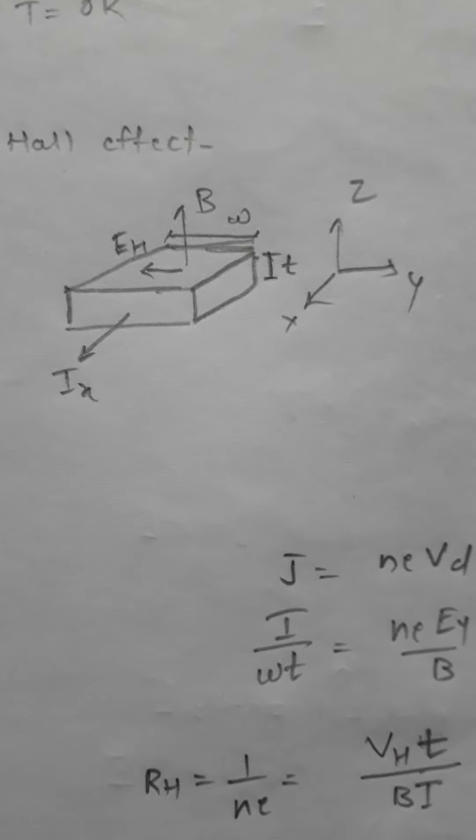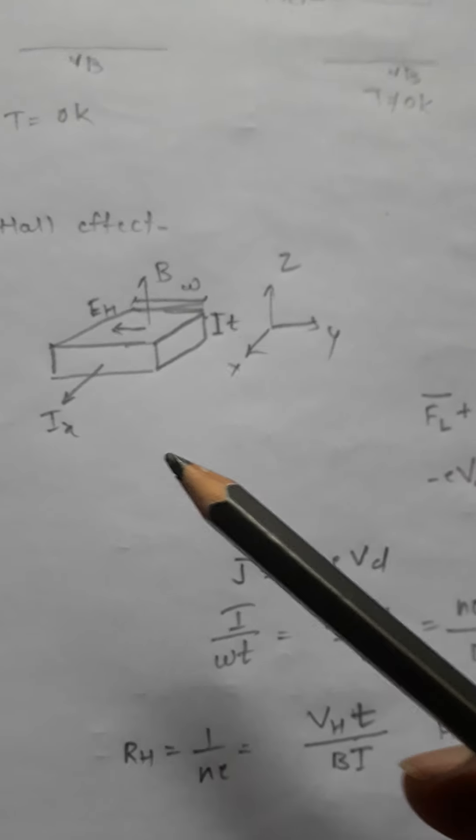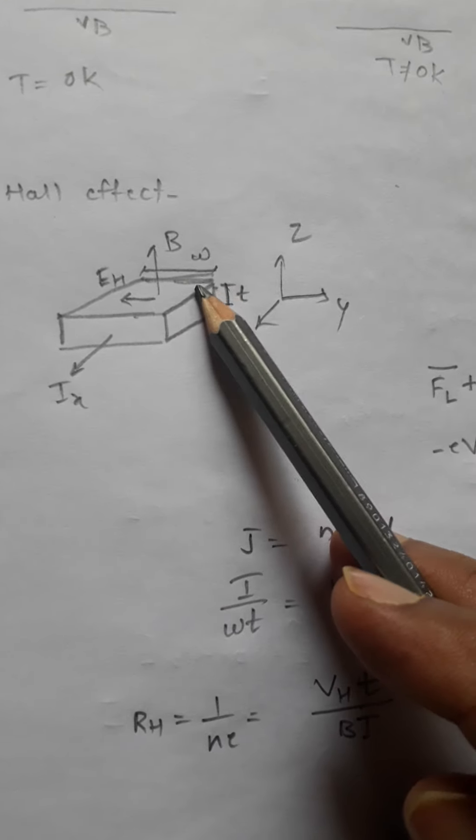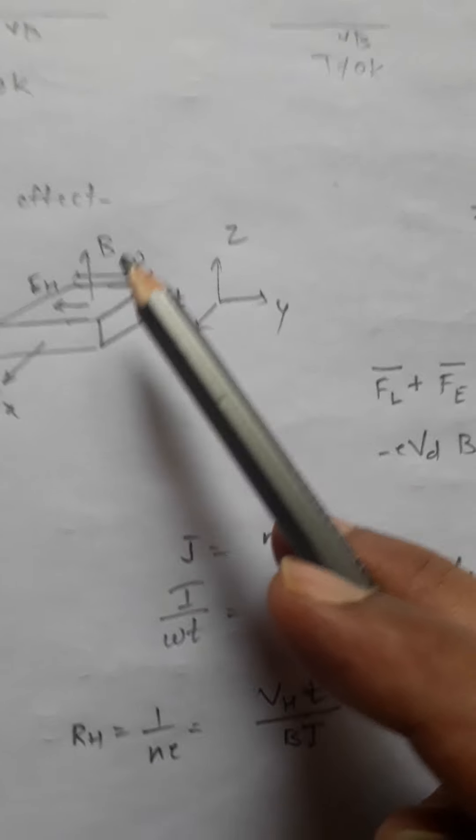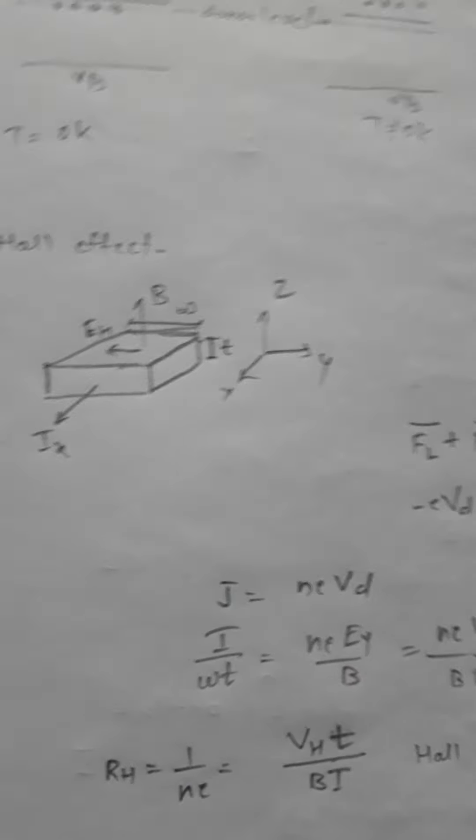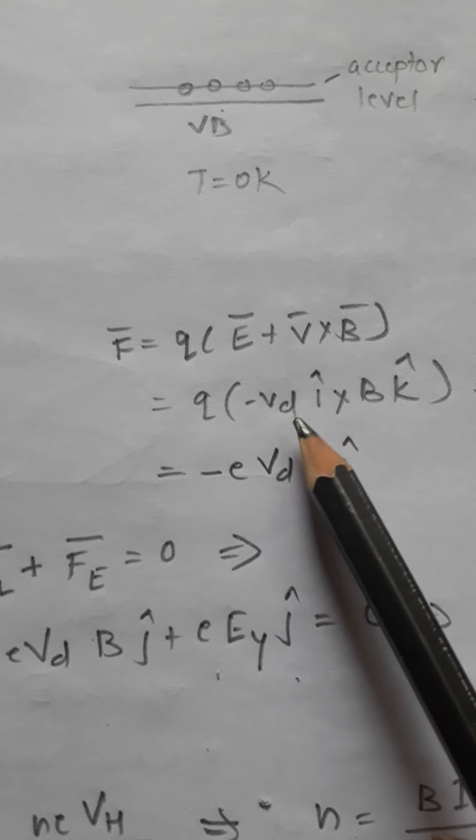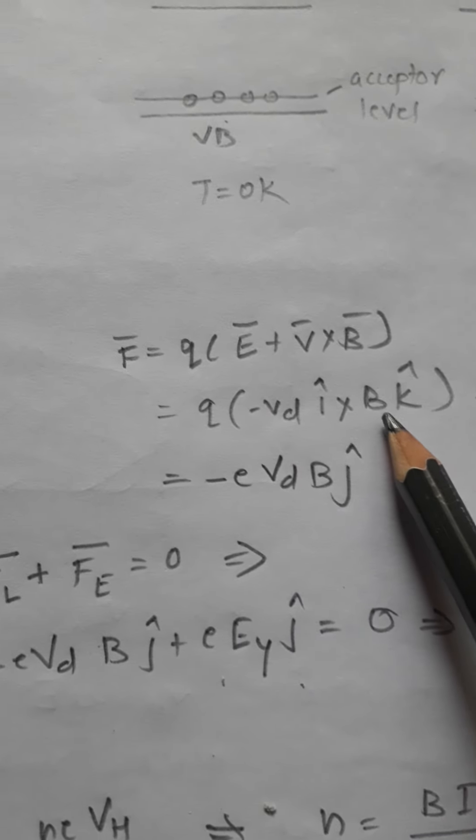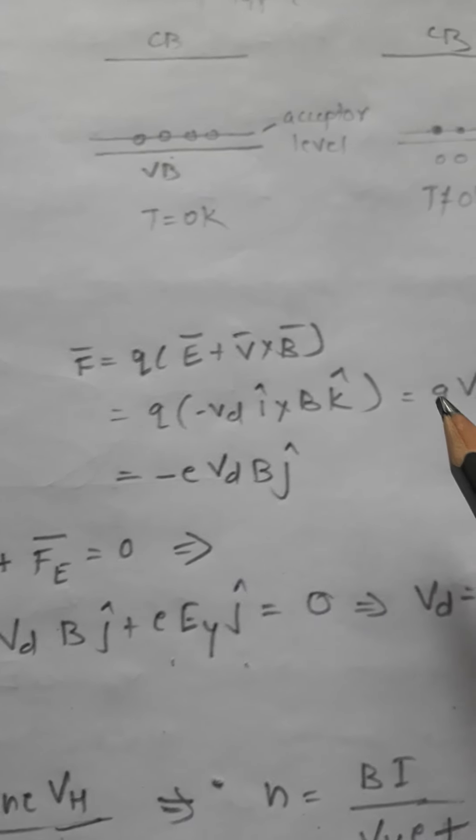Now let's do some analysis. Electrons are moving in this direction when we apply the magnetic field. There is a force which acts on the electrons. Let's find this force: F = q(E + vd × B). Here q is the charge of electron, vd is the drift velocity, and B is the magnetic field. Since q is minus e, we get F = -e√dB.